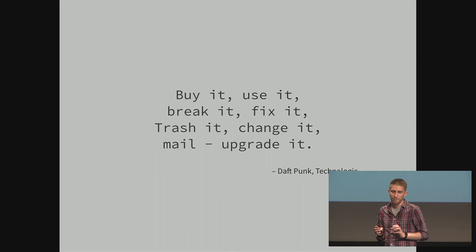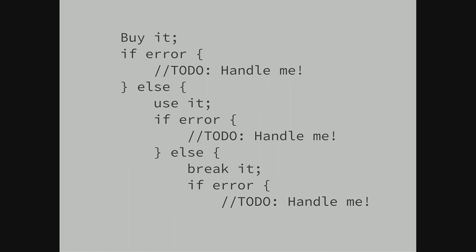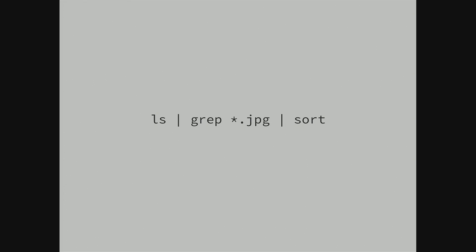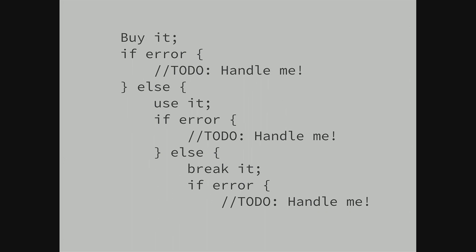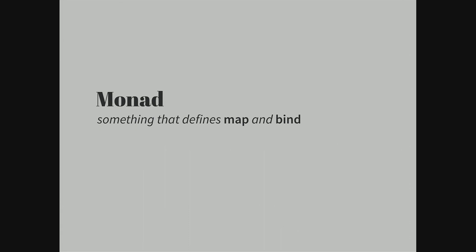Maybe you know the Daft Punk song: buy it, use it, break it, fix it. Well, as a programmer it would look more like this — you have error handling in between, you have piping of results somewhere else. In the end you have this pyramid of doom going to the right side of your monitor. It's not so nice, but what you actually want to write is something like using pipes: take the result of something, put it somewhere else, and somehow magically solve the error handling in between. So that is what a Monad is about — you have something that produces a result or a failure, maybe there's an error you have to handle, then you go to the next step.